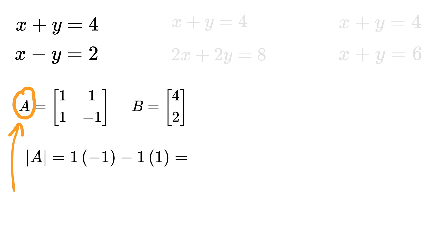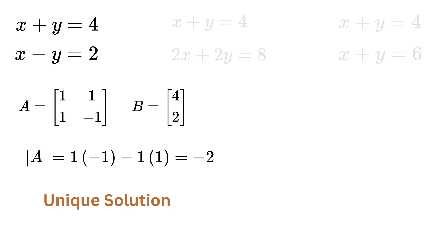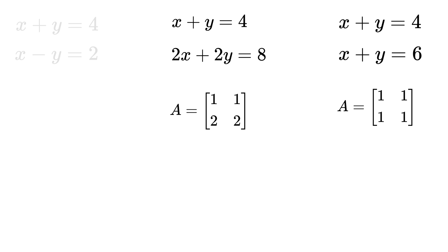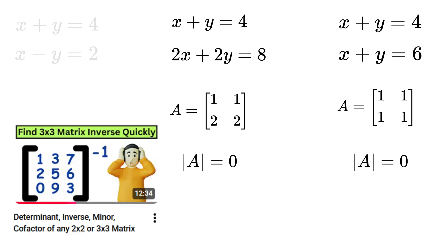For the first case, the determinant equals −2, which is non-zero, giving a unique solution. For both the other cases, it is easy to check that their determinants are zero. If you don't know how to calculate determinants, there is a video on that — the link is in the description.